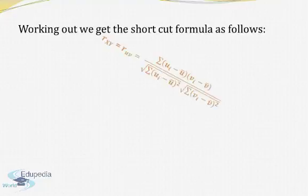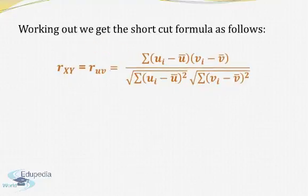So when you work out, your shortcut formula will be as follows. Your r_xy, when using the first form of the formula, as we have seen two different sets of formula, the first form of the formula will be summation (u_i minus u_bar) times (v_i minus v_bar) divided by square root of summation (u_i minus u_bar) squared times (v_i minus v_bar) squared. Of course the denominators are both under the square root.